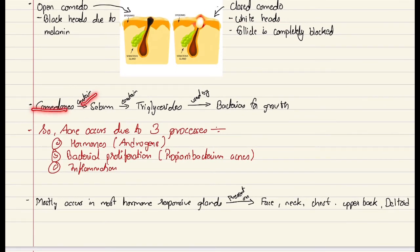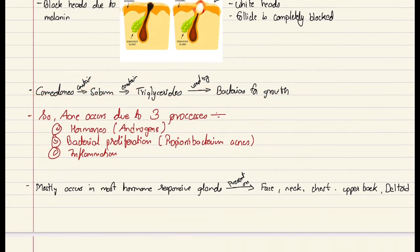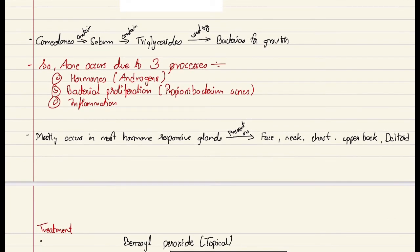Comedones contain sebum. Sebum contains triglycerides, which are used by the bacteria for growth. Hence, there is bacterial infection in acnes. Acne occurs due to three processes: hormones or androgens, which increases the size of the sebaceous gland and increases the production of the sebaceous gland, leading to blockage of the duct; bacterial proliferation, where the major bacteria is Propionibacterium acnes; and the process of inflammation.